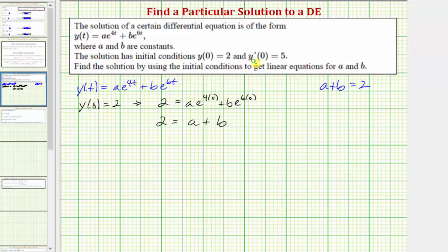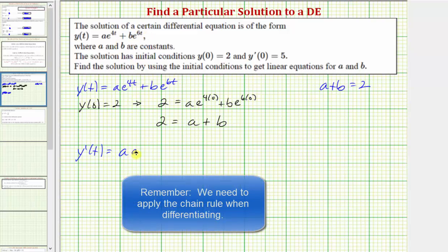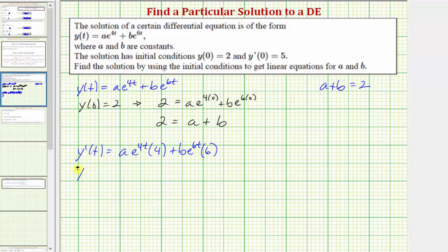To use the second initial condition y'(0) equals five, we first need to find the derivative of y with respect to t. So y'(t) equals the derivative of a times e to the 4t plus b times e to the 6t, which gives us 4a times e to the 4t times four, plus b times e to the 6t times six, yielding y'(t) equals 4a e to the 4t plus 6b e to the 6t.